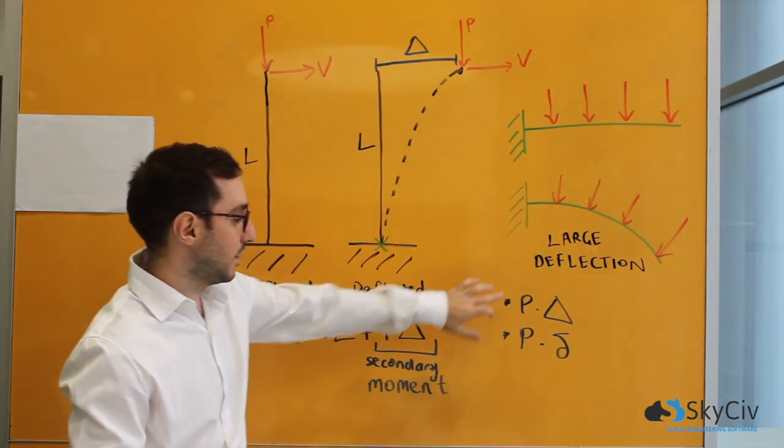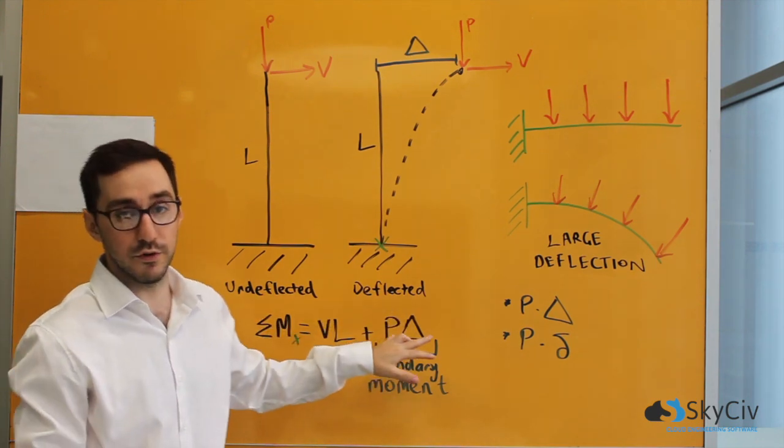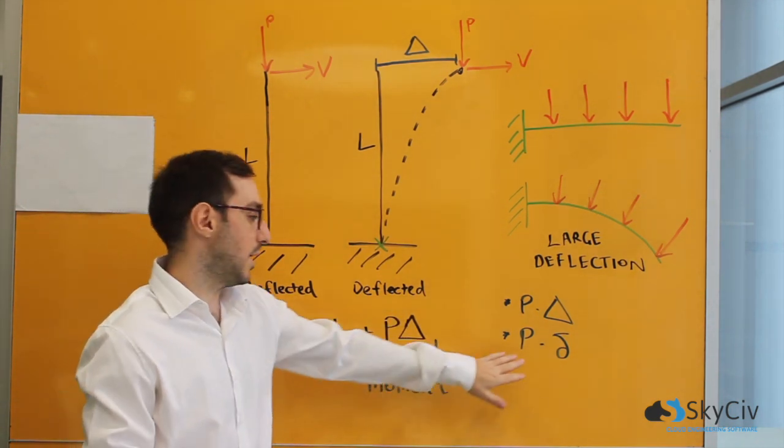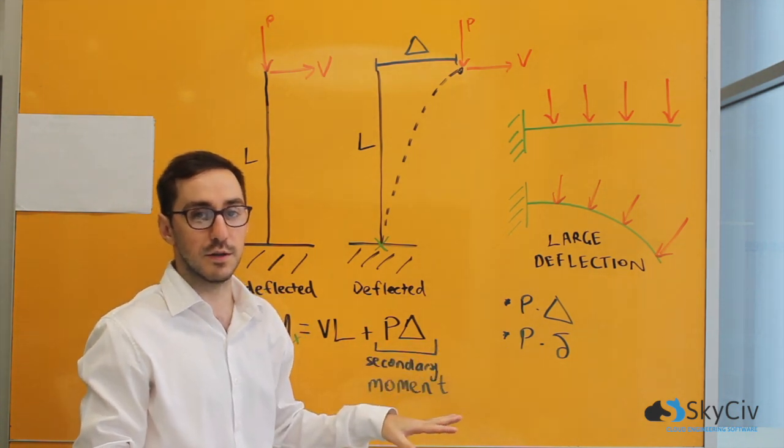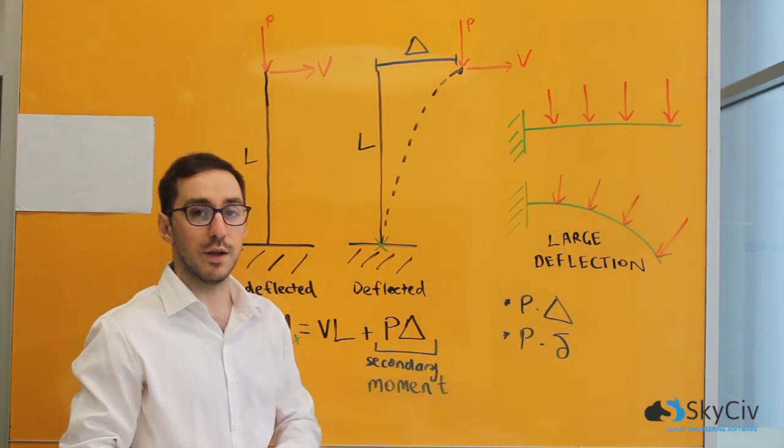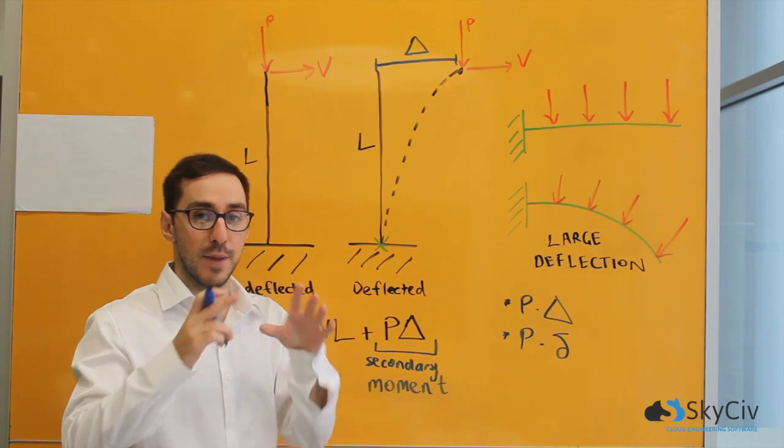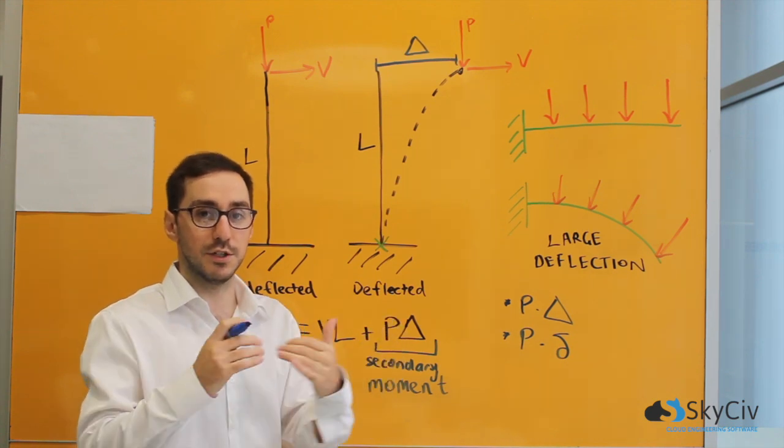P-big-delta is the secondary moment that we've mentioned so far. P-little-delta is usually a small P-delta effect and it's involved when the bending of the member changes the...